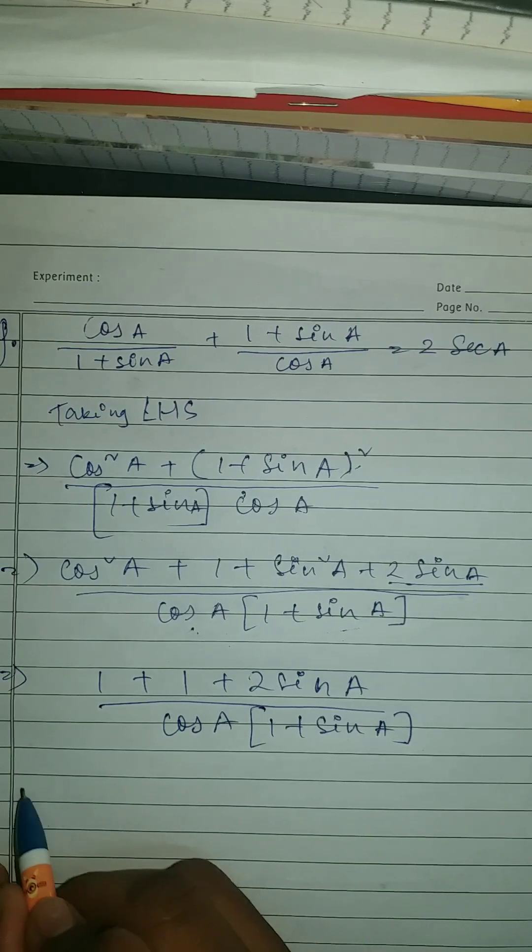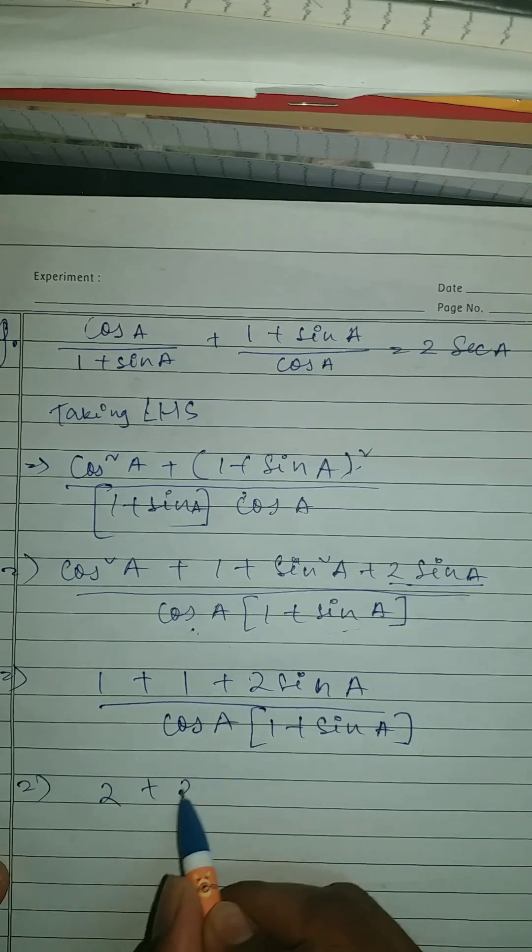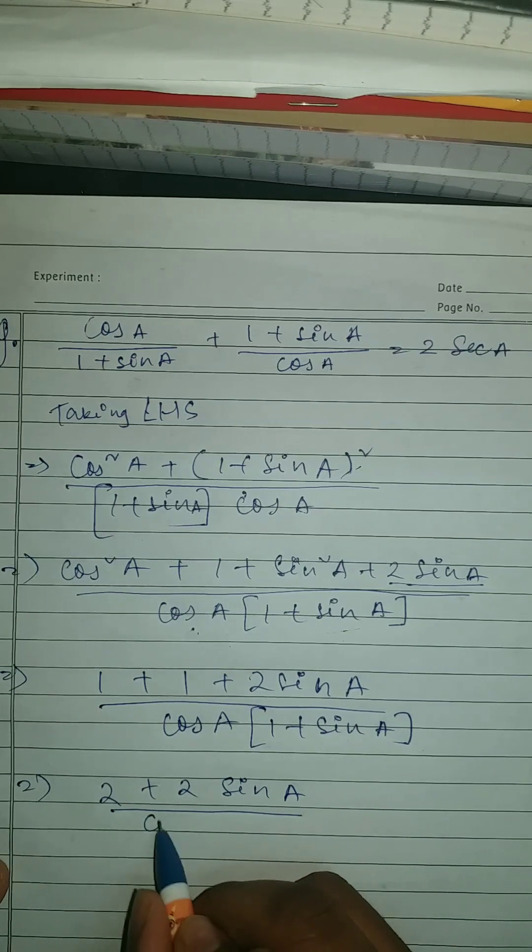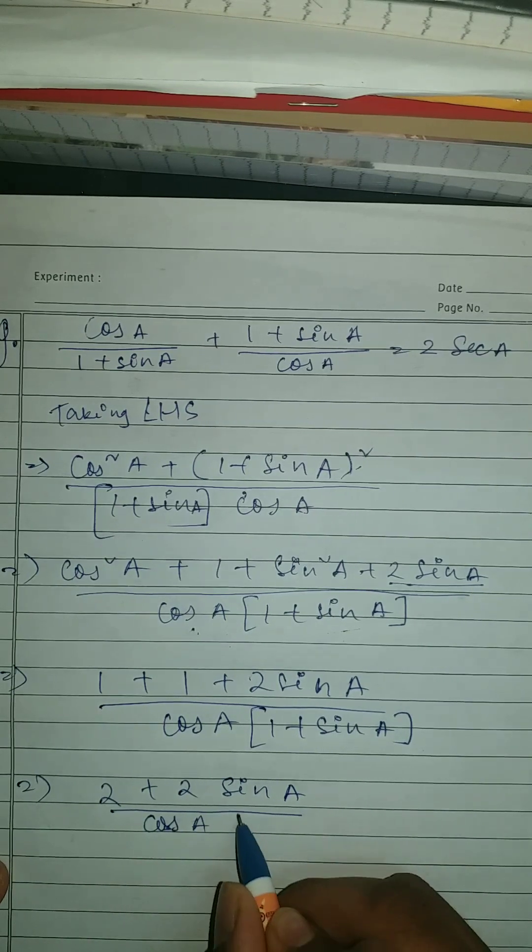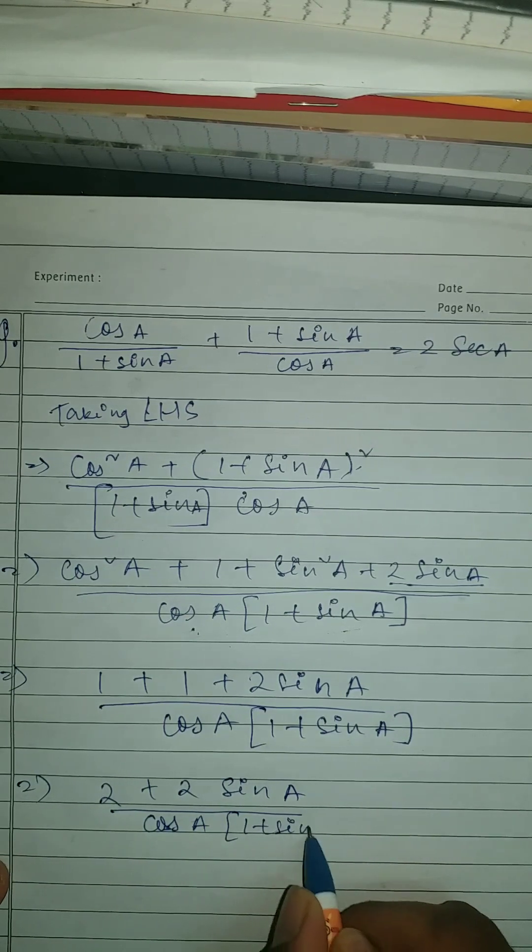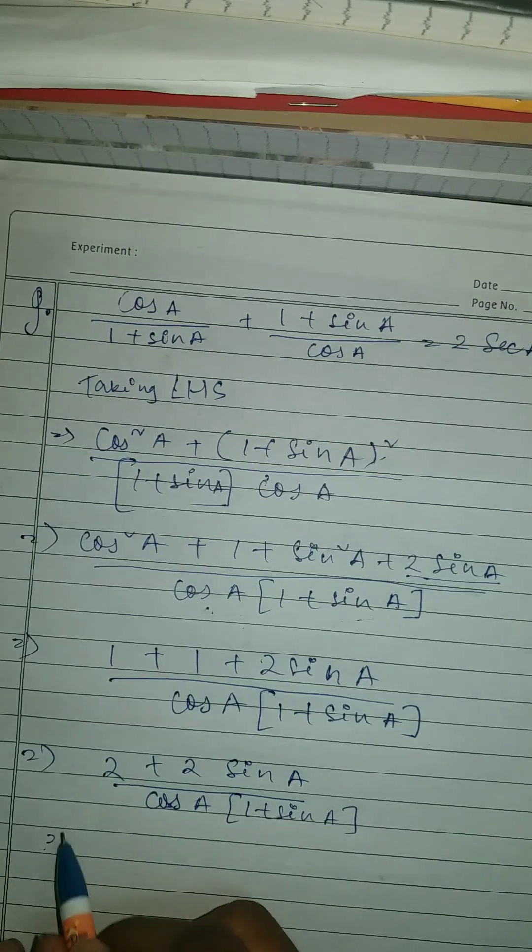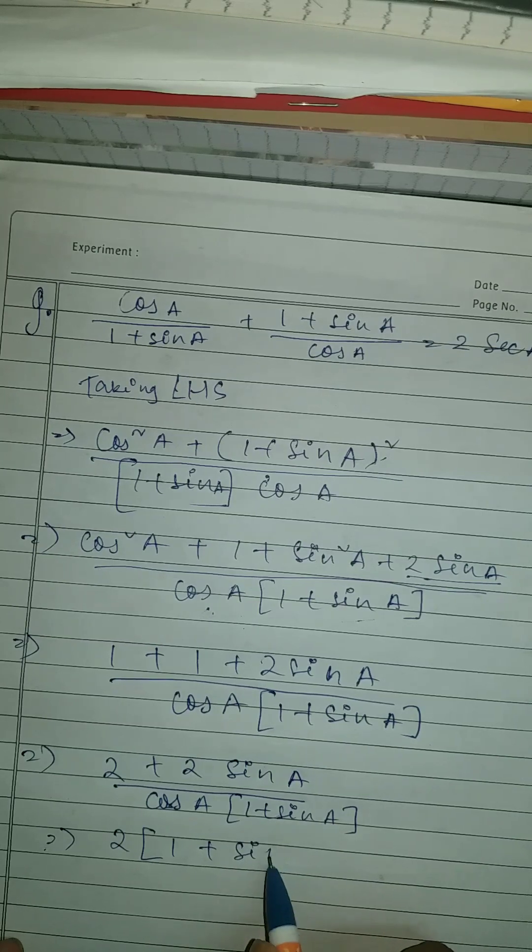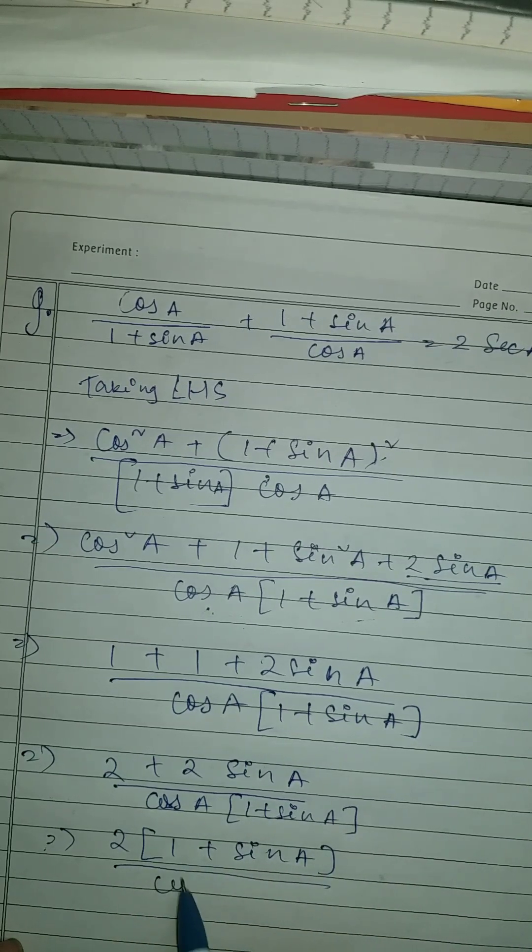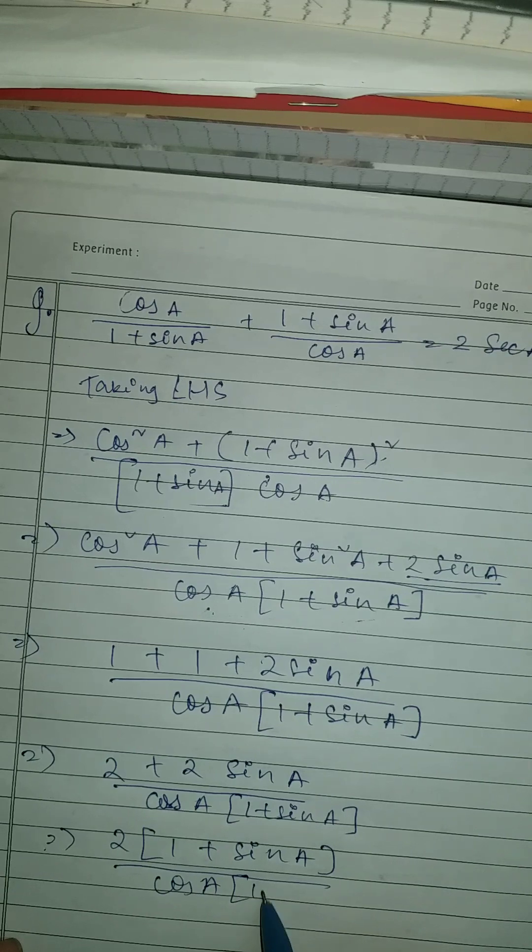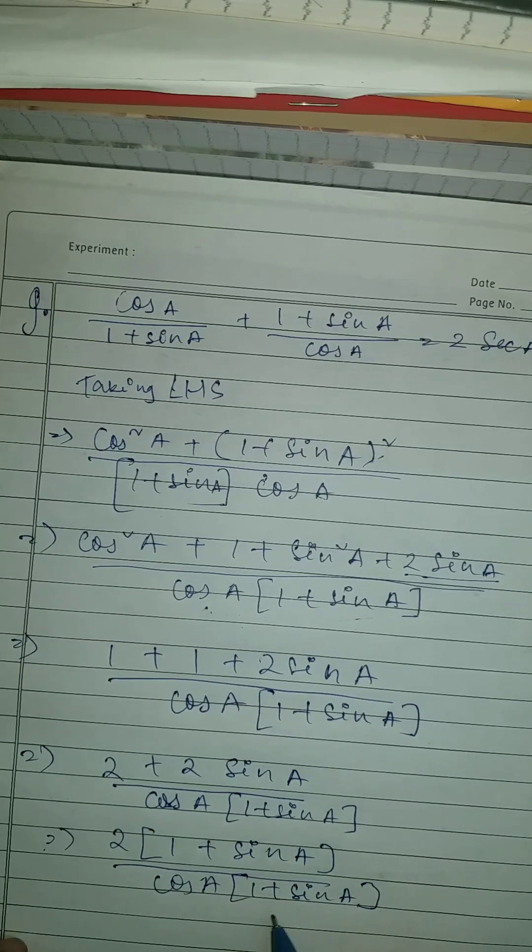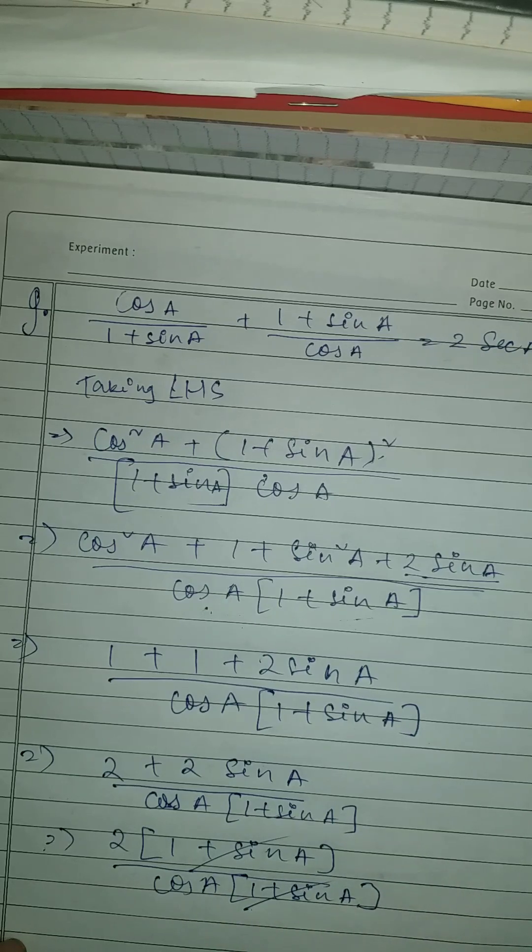Once you done that, so here what we got, we got 2 plus 2 sine a. So it should be your 2 in bracket 1 plus sine a. Now here we can see that these are cancelling. So yeah, it is cancelled.